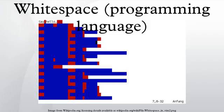History: Whitespace was created by Edwin Brady and Chris Morris in 2002. Slashdot gave a review of this programming language on April 1, 2003. The same year an interpreter for it was implemented in Whitespace.